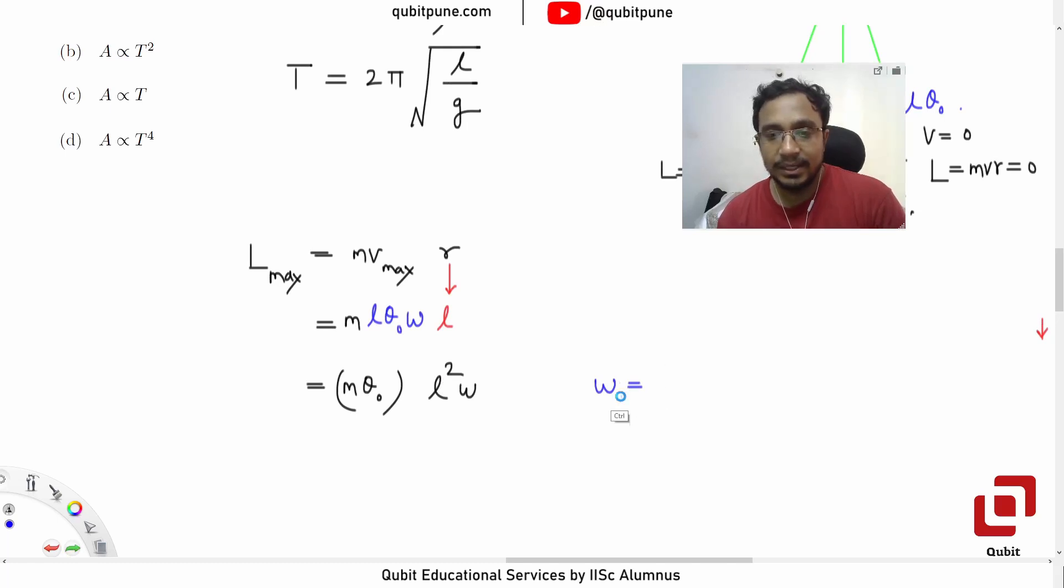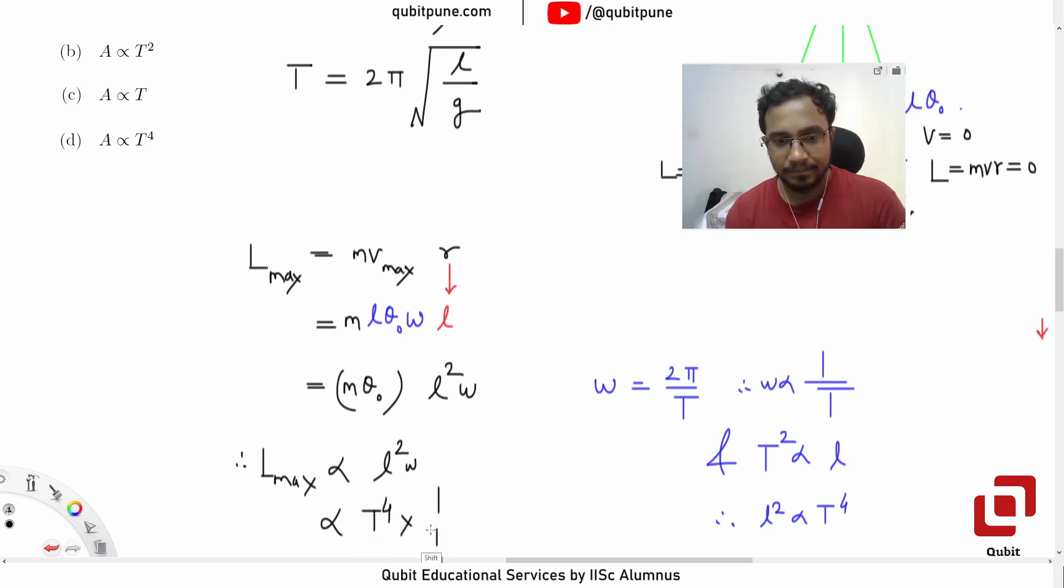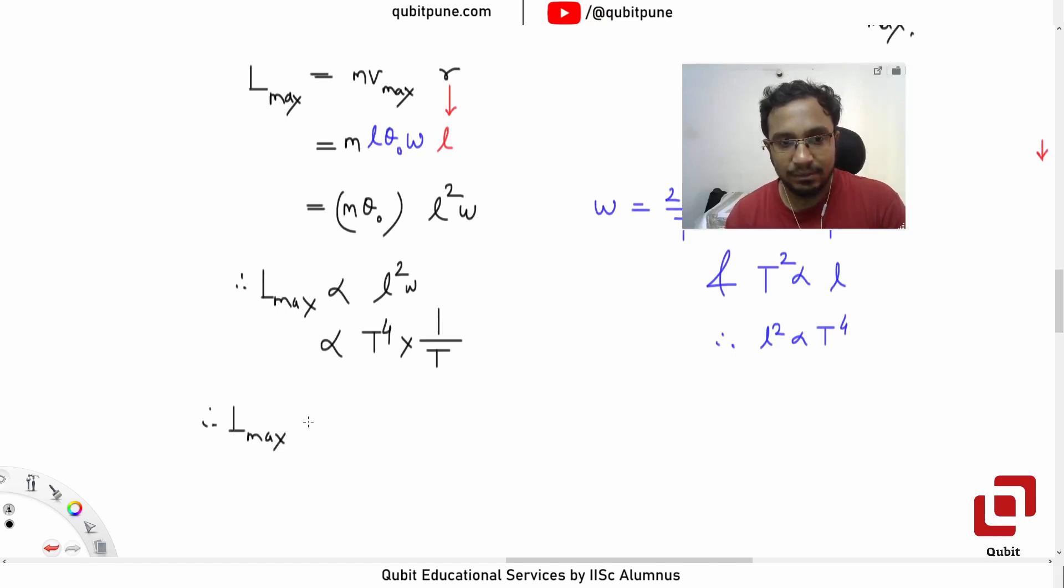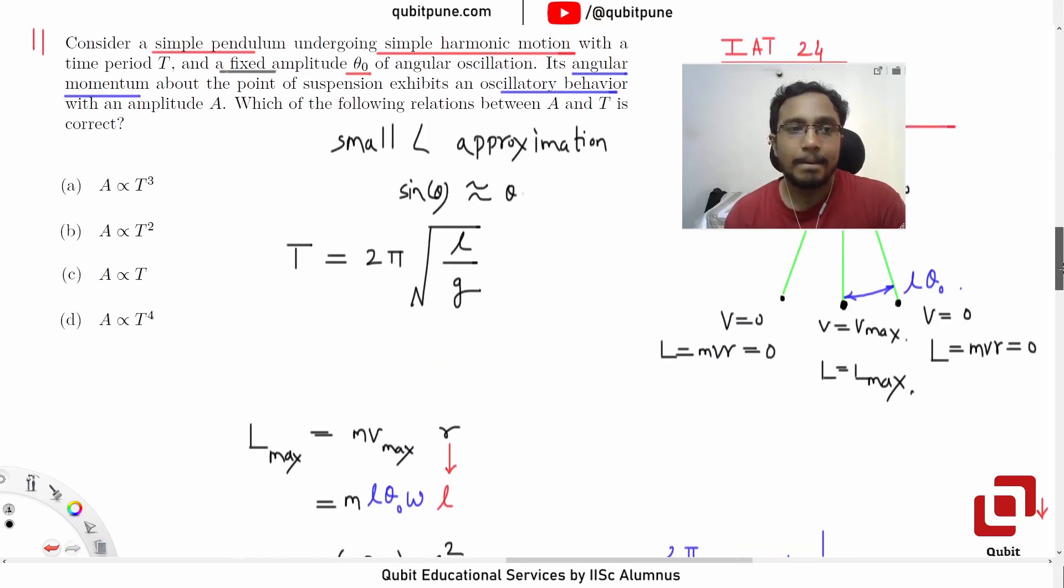L squared and omega. Now omega is 2π by T. Therefore omega varies inversely with T. And what will happen? Square it. And T squared varies with L. Right. So L squared will vary with 4th power of T. Put it there. Therefore L max, which is proportional to L squared omega, will now be proportional to T raised to 4 into 1 upon T. Right. Omega is inversely proportional to T. Therefore L max will be proportional to 3rd power of time period. Option D.